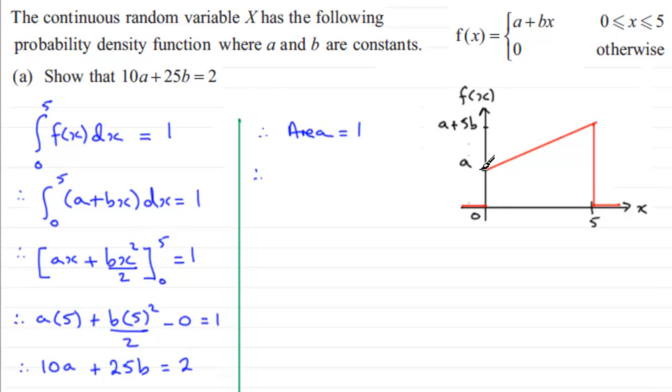So what we've got then is the sum of the parallel sides so that's that one there A plus this side here which is a length of A plus 5B. We multiply this by the distance between the two parallel sides which is 5 units and we divide the lot by 2.